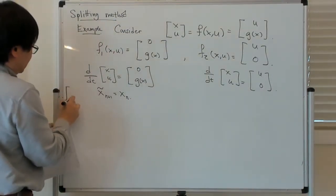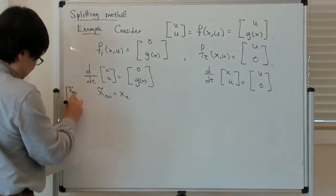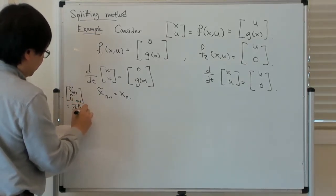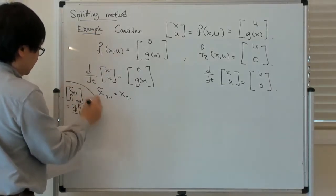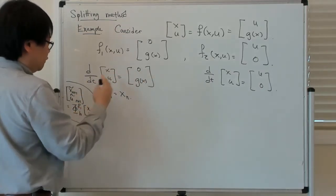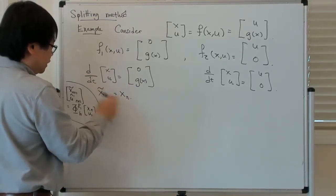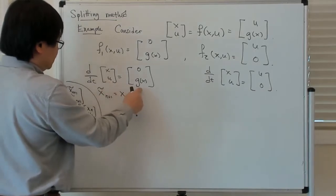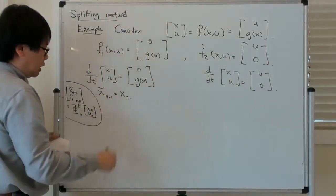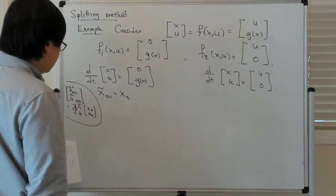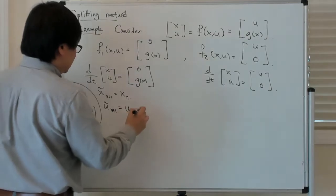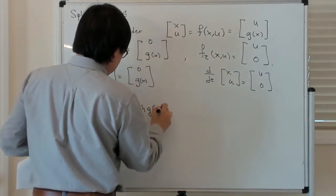What I'm saying notationally is that x n plus 1 tilde and u n plus 1 tilde is equal to the exact flow of f1 with time step h applied to x n u n. After applying this flow, x doesn't change, so x n plus 1 tilde is equal to x n. For the u term, there's a vector field component which is g of x. X is constant along the whole thing, so it's essentially a constant vector field. That's saying that u tilde n plus 1 is equal to u n plus h times g applied to x n.